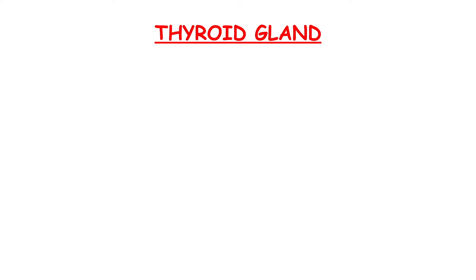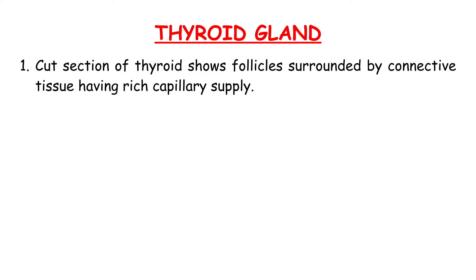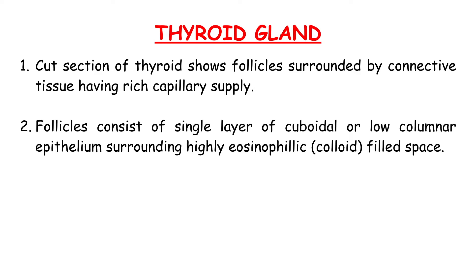Thyroid Gland. Cut sections of the thyroid show follicles surrounded by connective tissue having a rich capillary supply. Follicles consist of a single layer of cuboidal or low columnar epithelium surrounding a highly eosinophilic colloid-filled space.